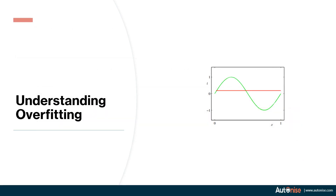Let's understand an important concept of machine learning — overfitting. We'll use an example to explain it. There is a graph drawn here; the green graph represents our ideal distribution. We have a green function and we are going to sample some points from this green function, meaning we'll randomly choose some x values and take the corresponding y values from the graph.